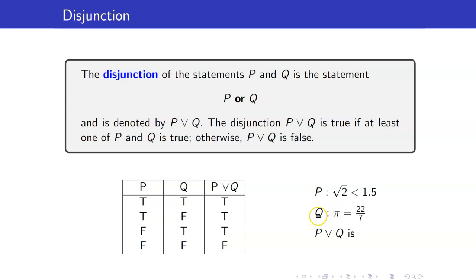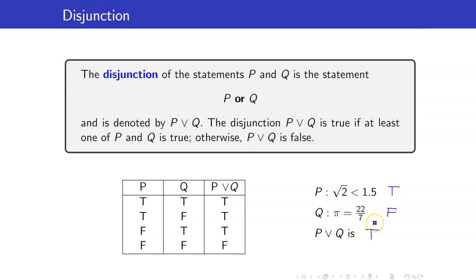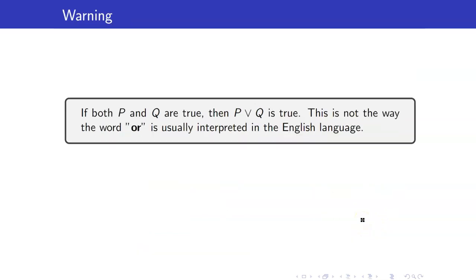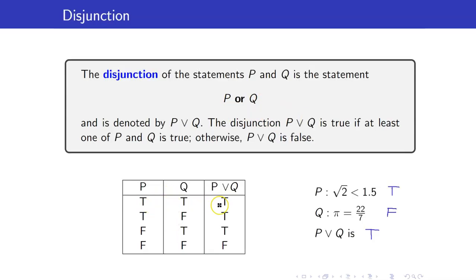Suppose that we have the same statements as before. What is the truth value of P or Q? We've seen earlier that P is true and Q is false. One of them is true, so therefore P or Q is true. Take note that if both P and Q are true, P or Q is still true — we've seen that in the truth table.